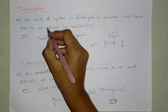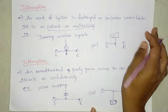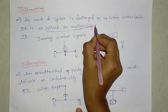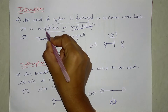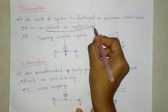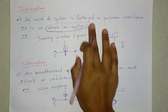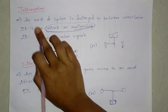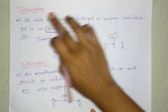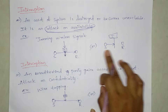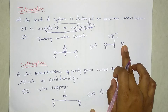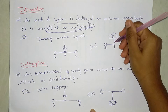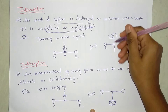Now let's see what interruption is. Interruption is an attack on availability — this is the main point to remember. We have a sender and a receiver, and a hacker will interrupt the sending signal between them.